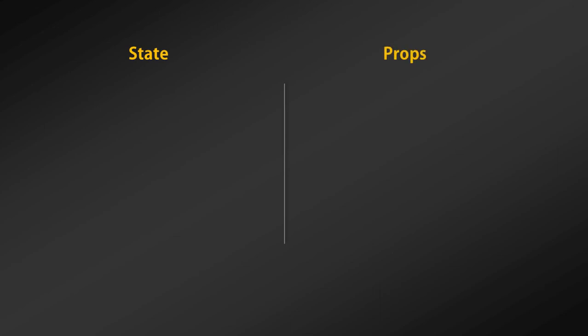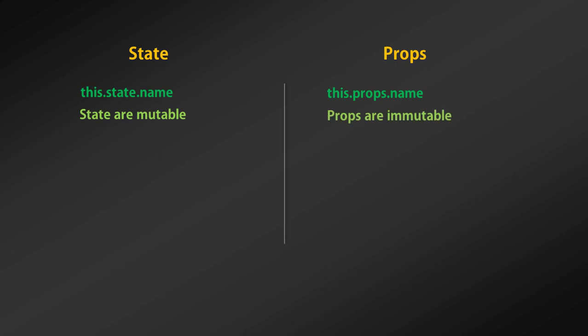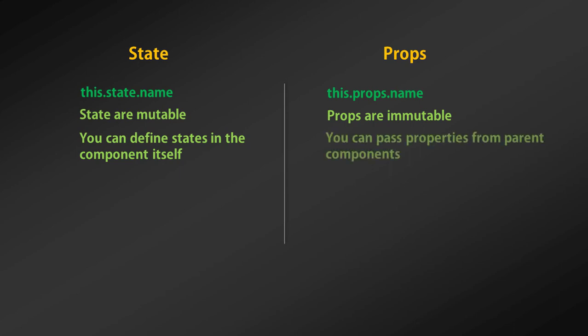State and properties are both attributes of a class — meaning they are `this.state` and `this.props`. That's their only similarity. One primary difference is that state is mutable whereas properties are immutable. Another difference is that you can pass properties from parent components, whereas you define state in the component itself, not its parent.